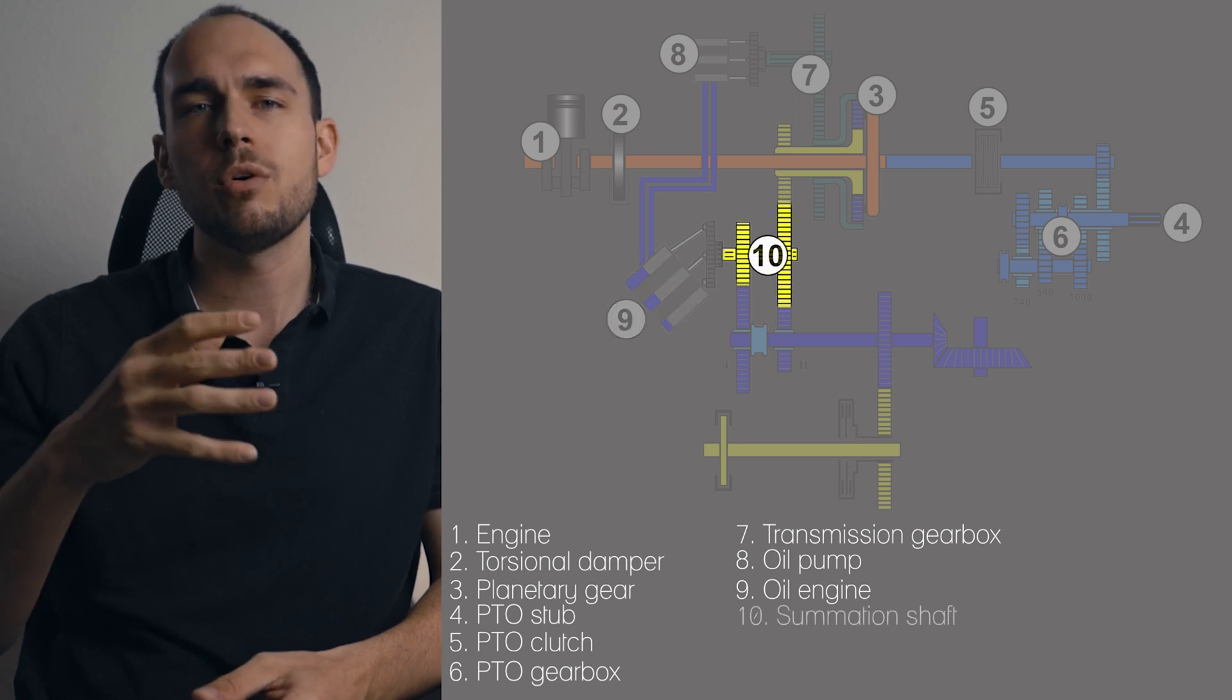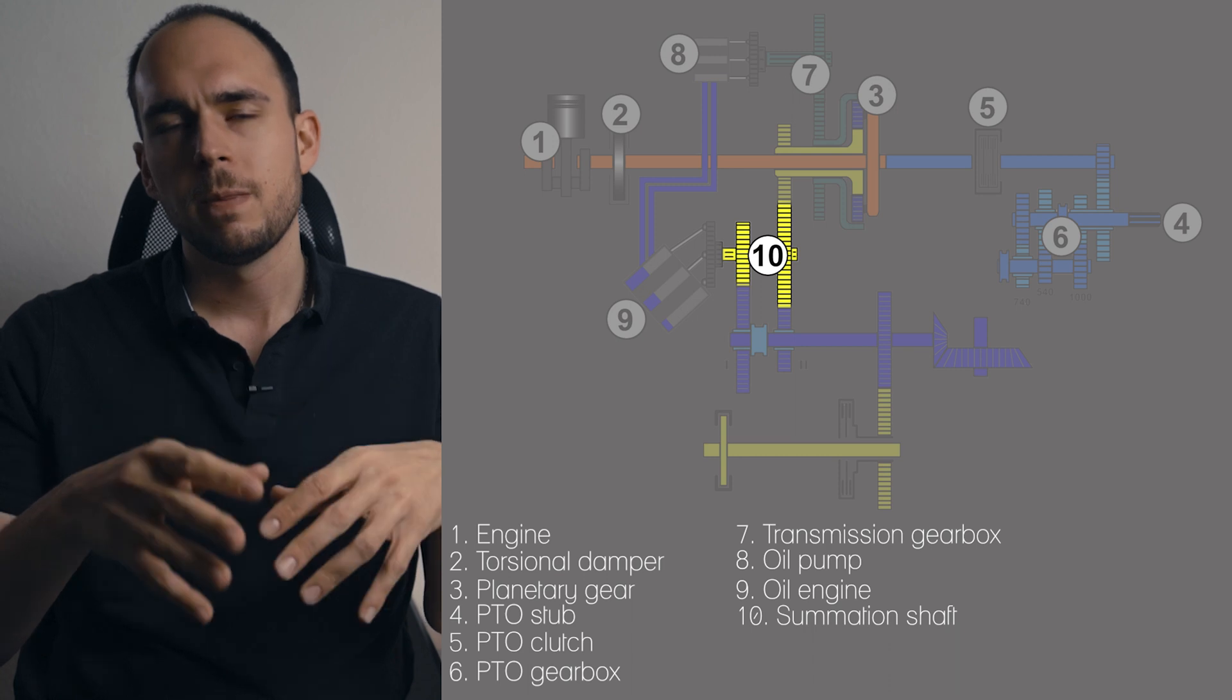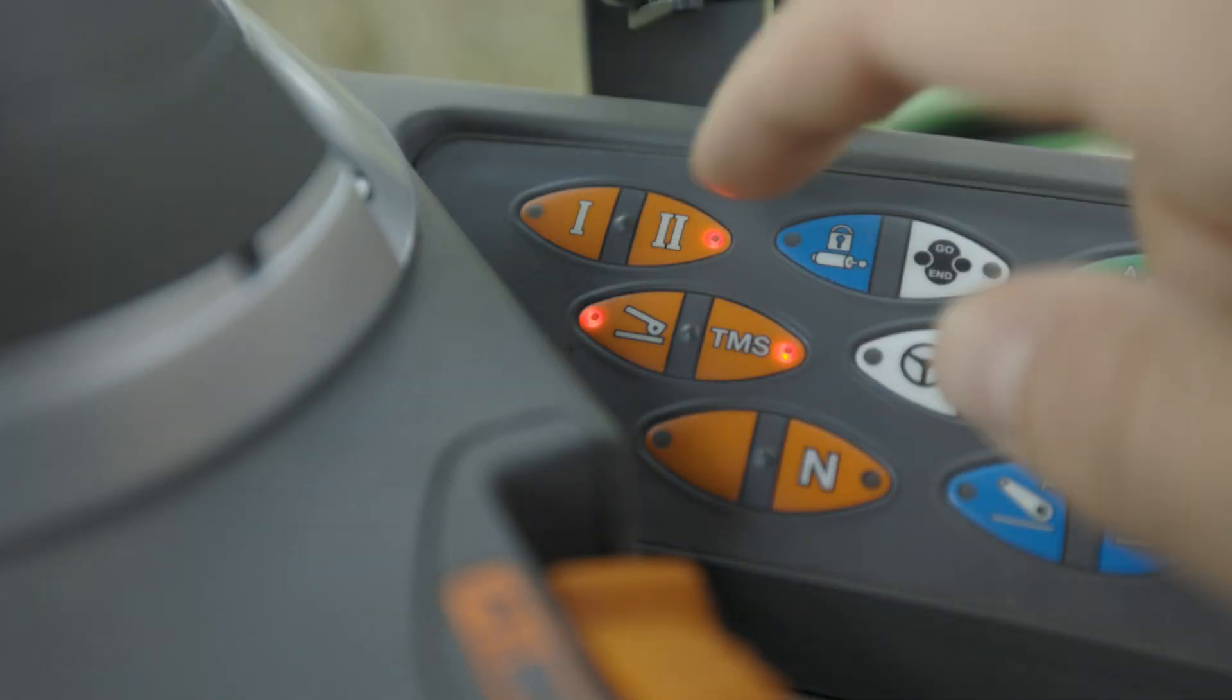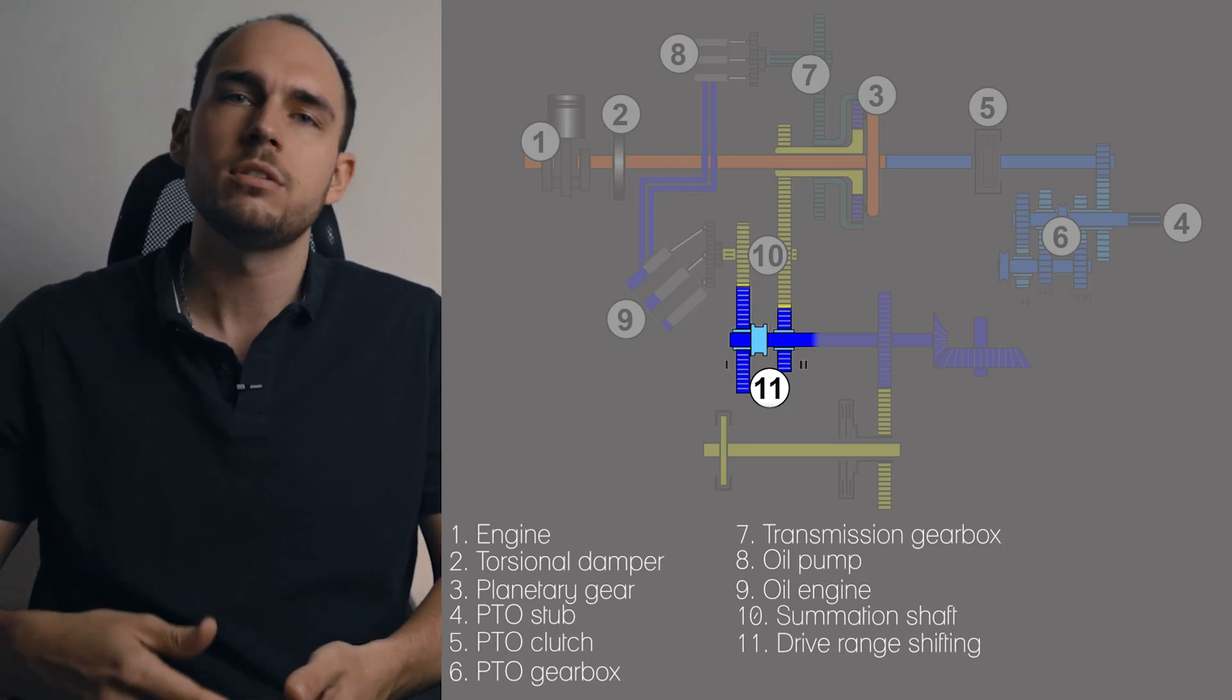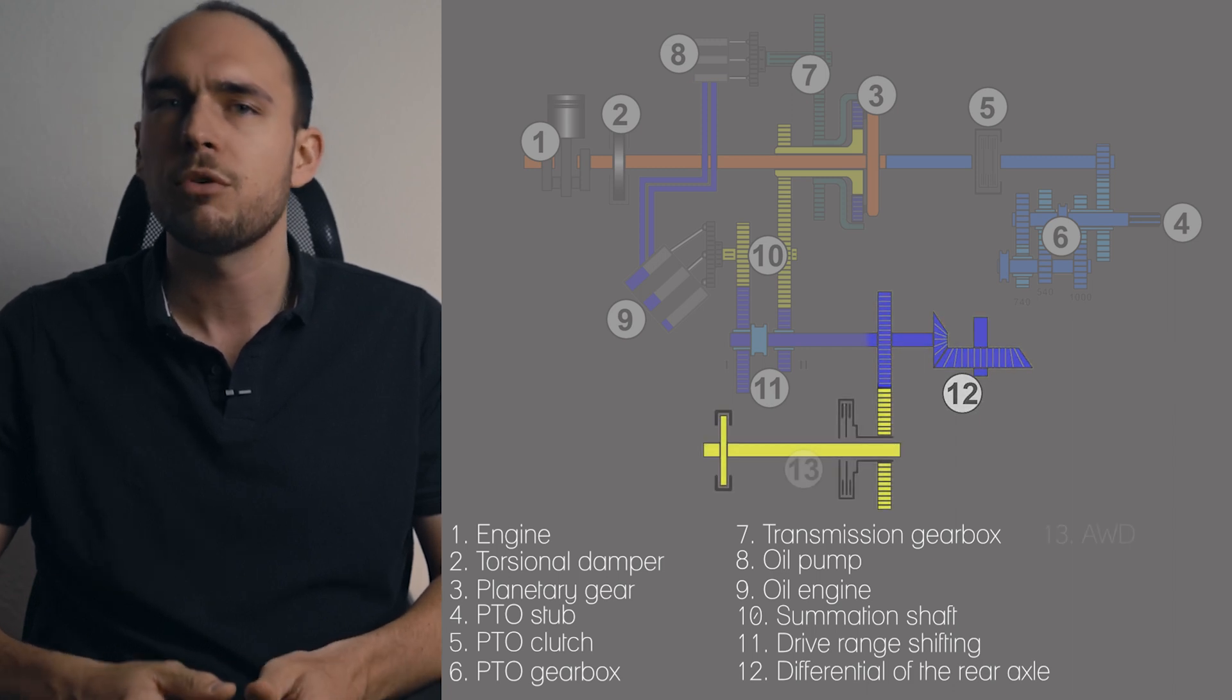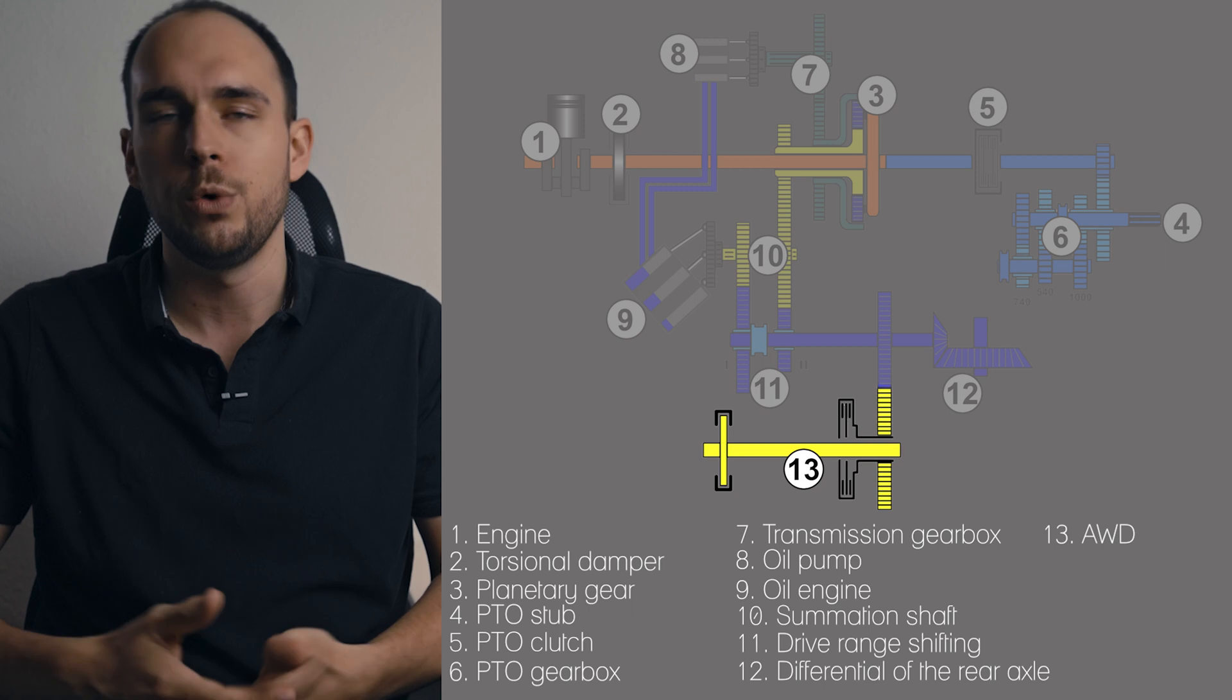Next we see the so-called sumission shaft. This shaft again combines the mechanical and the hydraulic power branch. This is followed by the drive range shifting which we know in our cabin as drive range one and two. Imagine it's like a derailleur on a bicycle which increases the efficiency of the transmission. From there a shaft goes to the differential of the rear axle and down to the drive of the front wheels where there is of course also a gearbox and our all-wheel clutch.